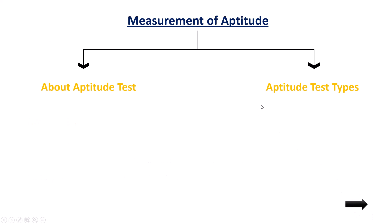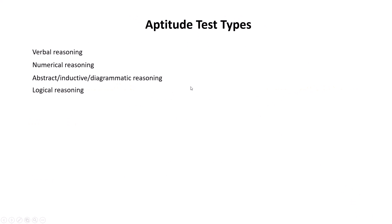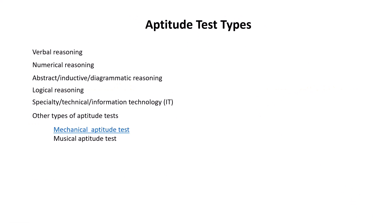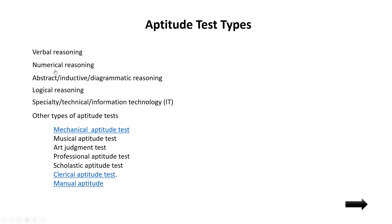Next are the aptitude test types. Different types include: verbal reasoning, numerical reasoning, abstract or inductive or diagrammatic reasoning, logical reasoning, and specialty or technical or information technology. Other types are mechanical, musical, art, professional, scholastic, clerical, and manual aptitude.